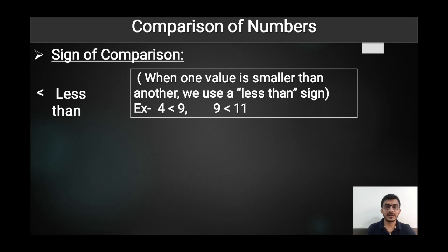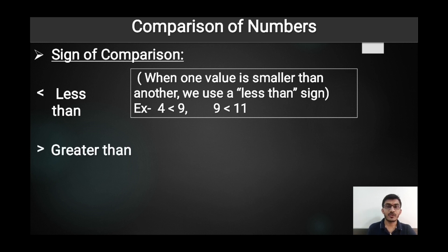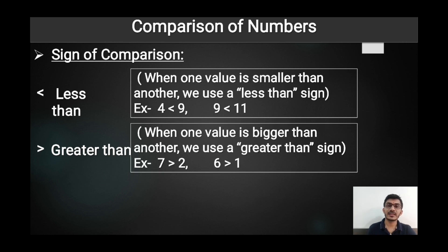In the second example, the numbers are nine and eleven. Nine is smaller than eleven, so we put the less than sign between nine and eleven. The second sign is 'greater than' — when one value is bigger than another number, we use the greater than sign.